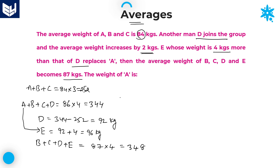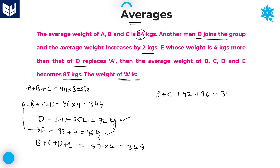Now, if you observe carefully, the question is: what is the weight of A? We know the weight of D and we know the weight of E. Substituting those values — D is equal to 92 and E is equal to 96 — into B plus C plus D plus E equals 348.